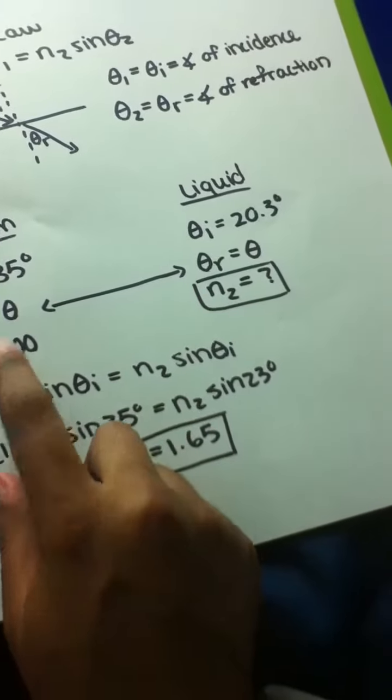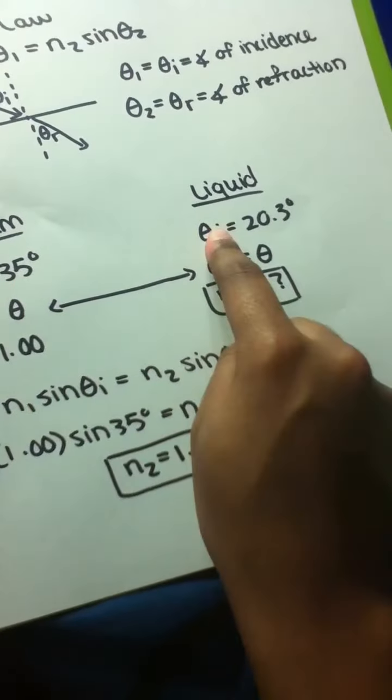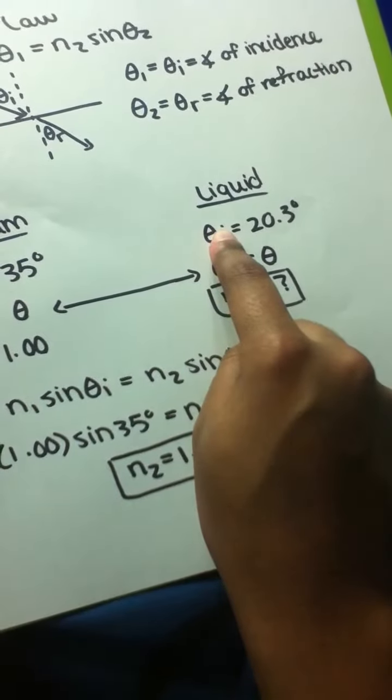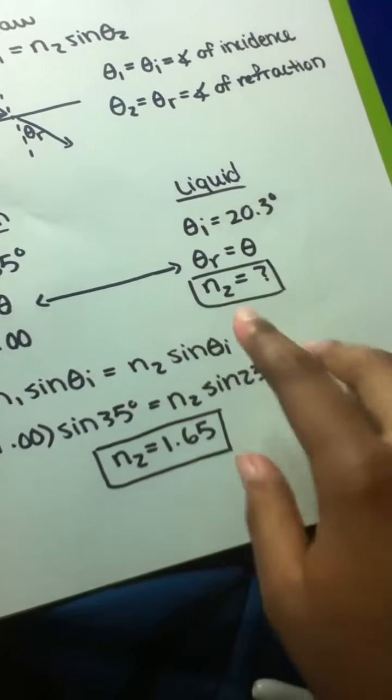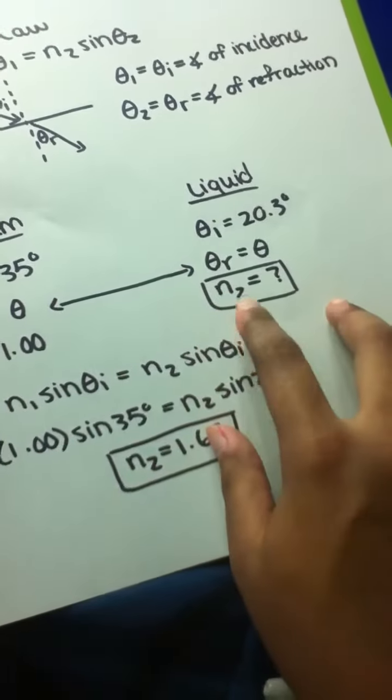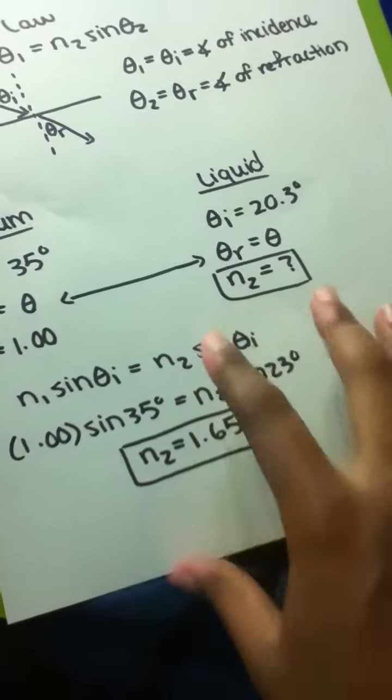We are given two angles of incidence, and therefore we can find the one unknown, or the refractive index of the liquid, or n₂.